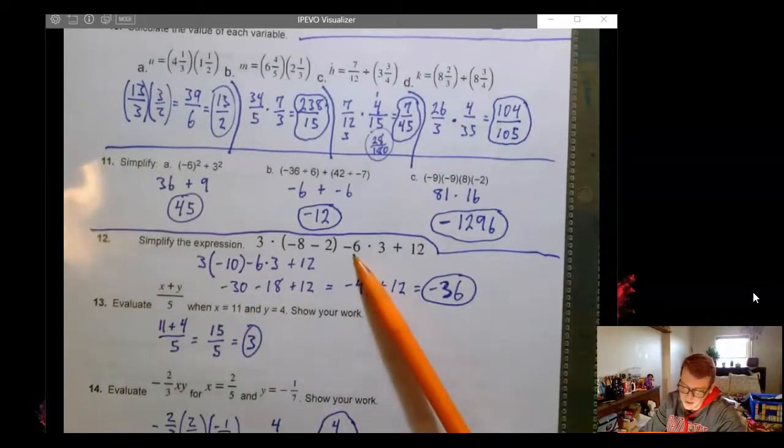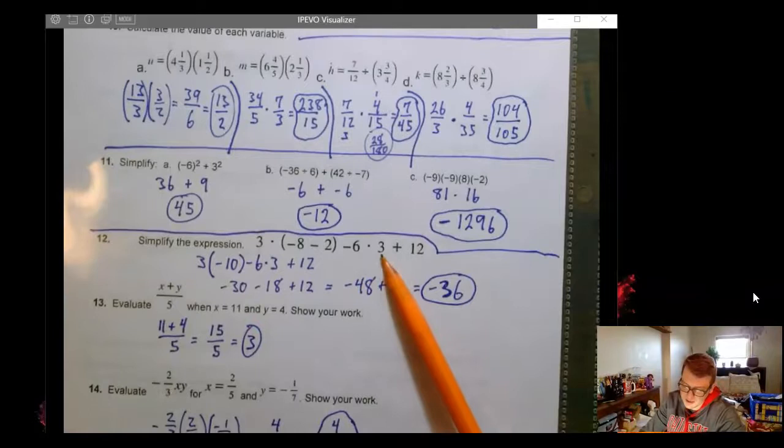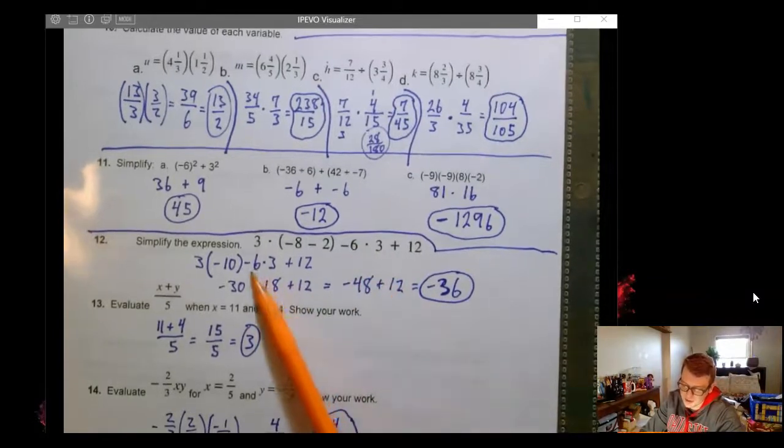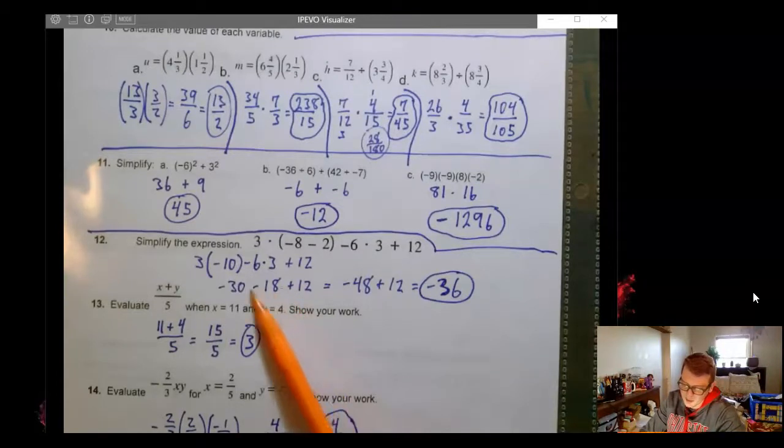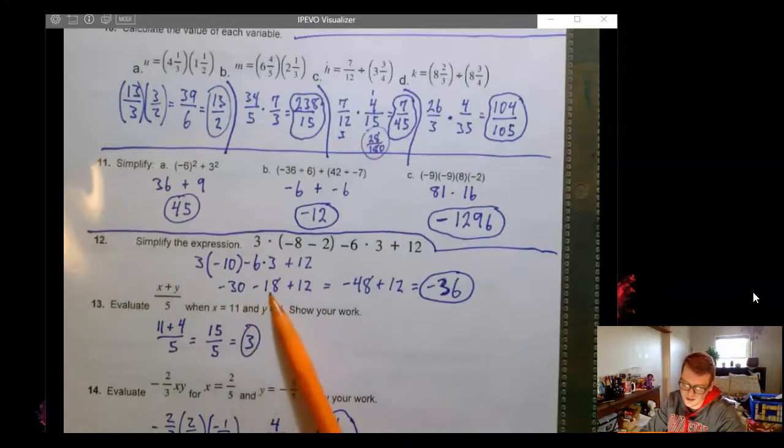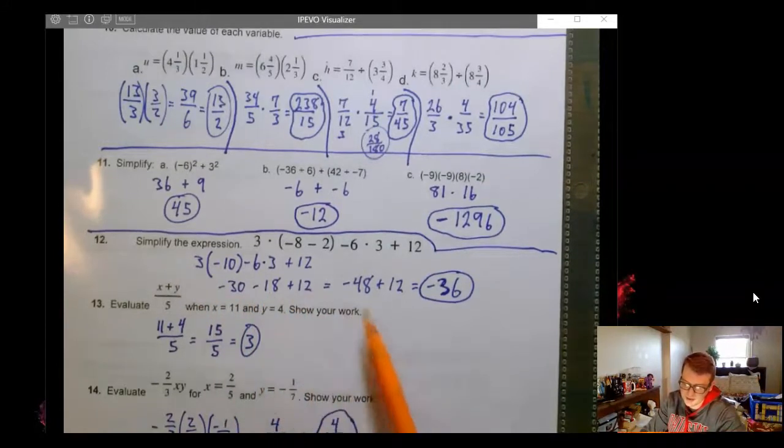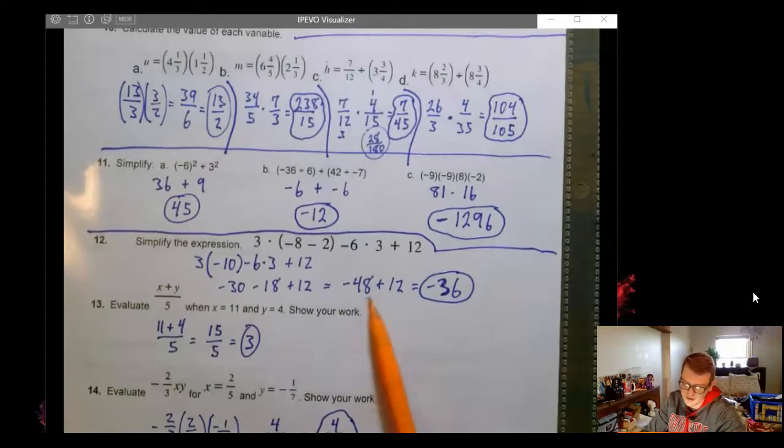So 3 times negative 10 will give us negative 30. Excuse me. This is really negative 6 times 3, right? This is a multiplication. So negative 6 times 3 is negative 18. We could add an addition symbol here if we want to. So negative 30 plus negative 18 plus a positive 12. Well, I'm going to group my negatives together and say negative 48 plus 12 is negative 36.